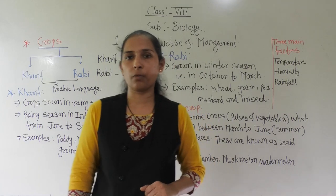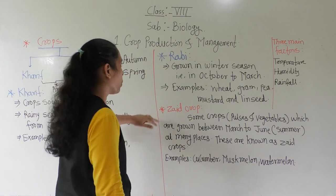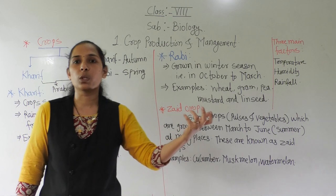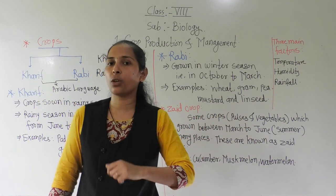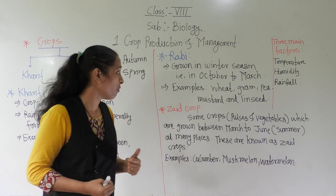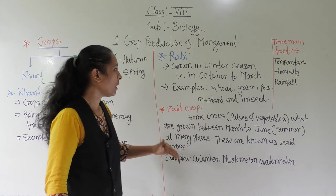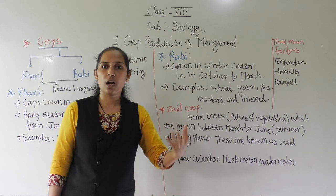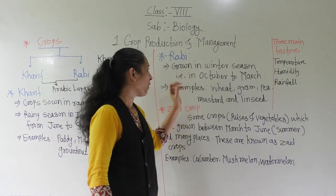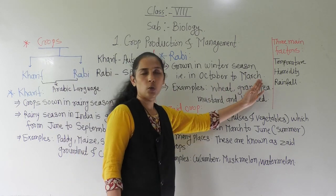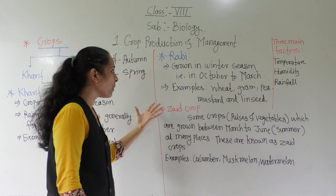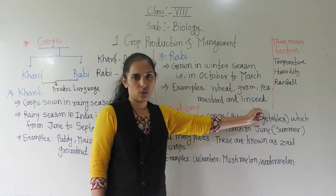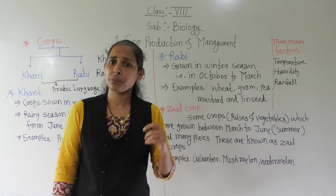Now we will discuss the next type of crop — rabi crops. Rabi means spring. Rabi crops generally grow in the winter season. The winter season in India is from October to March. So rabi crops are crops grown in winter season, from October to March. Examples of rabi crops are wheat, gram, pea, mustard, and linseed.